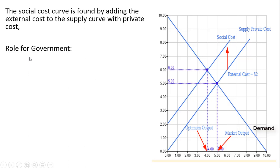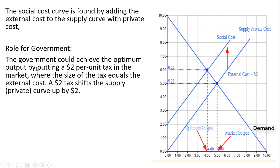There is a role for government in the presence of negative externalities. The government could achieve the optimum output by placing a $2 per unit tax on the market, where the size of the tax equals the external cost. A $2 tax shifts the supply curve — the supply curve with private cost — up vertically by $2.